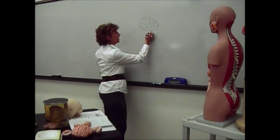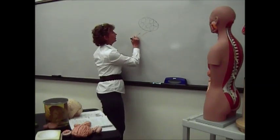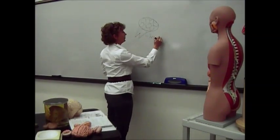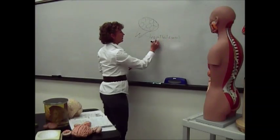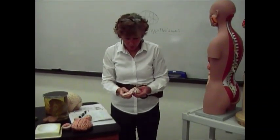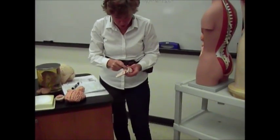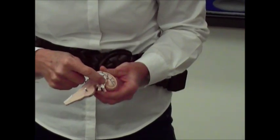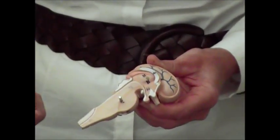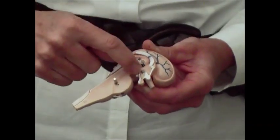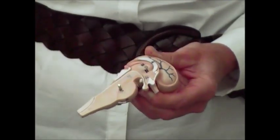Underneath the thalamus, you have a region known as the hypothalamus. On the models, you can see it makes a little W shape right there. Inside that W is what we call the hypothalamus. Remember, hypo means under the thalamus, so that W underneath the thalamus is going to be the hypothalamus.